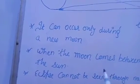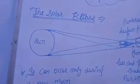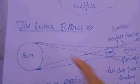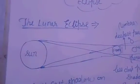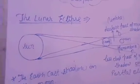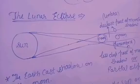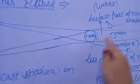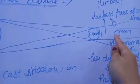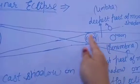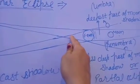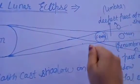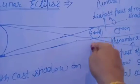Aapko ye samajh mein aa gaya hoga. Ab hum dusra part karenge. Dusra part hai lunar eclipse. Now this is the lunar eclipse. Lunar matlab chandragrahan. So this is the lunar eclipse and it occurs because moon is revolved around the earth. This is its path, path of moon. When it's revolved, humne solar eclipse mein dekha tha ki moon ki position is tarah thi aur wo yahan se sun ki aane wali light ko hide kar raha tha, jiski wajah se earth par shadow pad rahi thi.